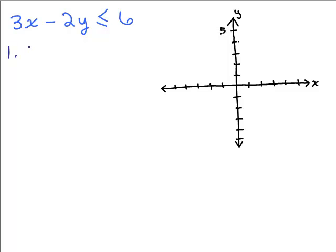Step one is always to graph it as if it's an equation, so the line. So we're going to graph 3x minus 2y equals 6 and we have to decide whether we're going to have a solid line or a dotted line. Solid line means it's part of the solution and since it's got an equal sign here, use a solid line since 3x minus 2y equals 6 is part of the solution.